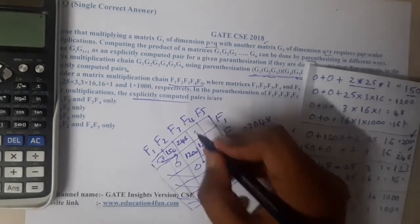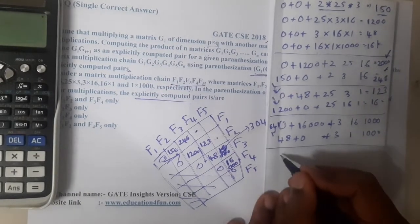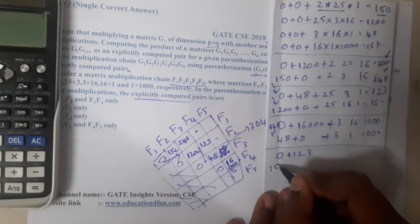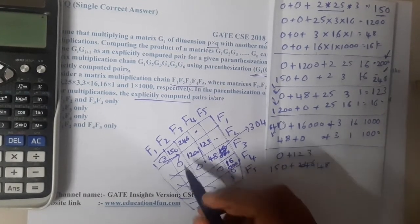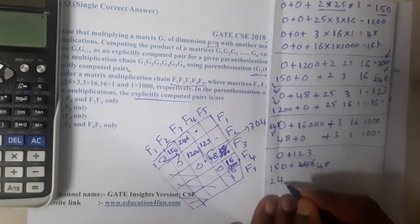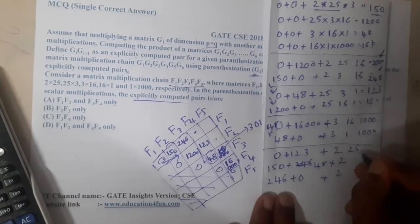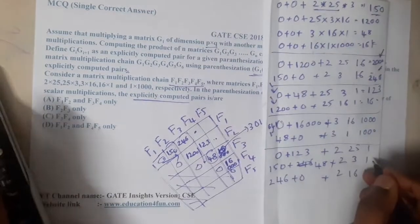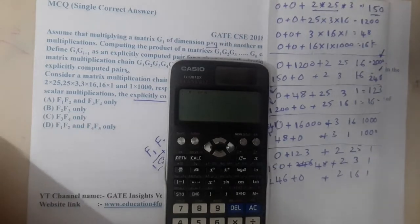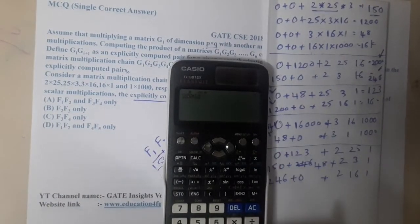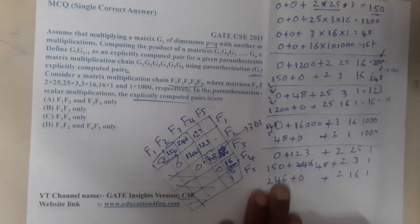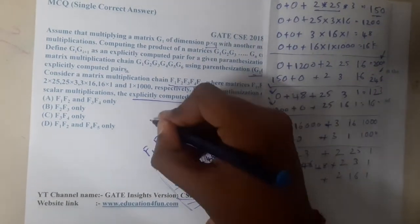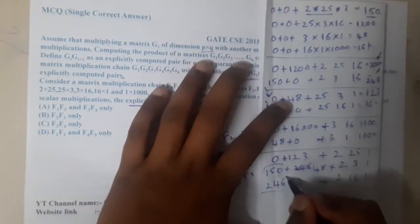Now for the next layer, computing f1 to f4. Using the staircase approach: 0 + 123 = 123, then 150 + 48 = 198, then 246 + 0 = 246. First value gives 25×2 = 50 + 123 = 173. With my calculation the minimum is 173, and the others (150+..., 243) are greater. So f1 to f4 = 173.